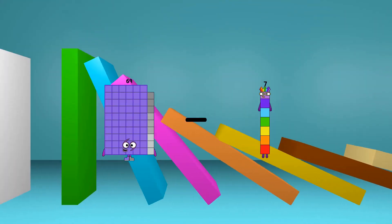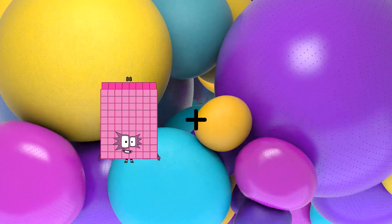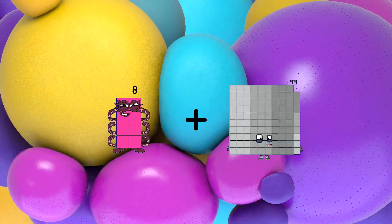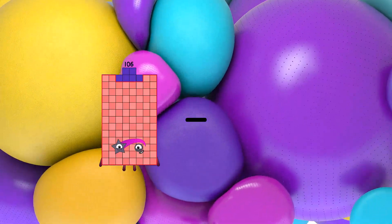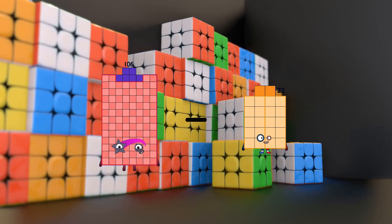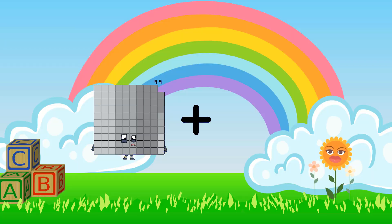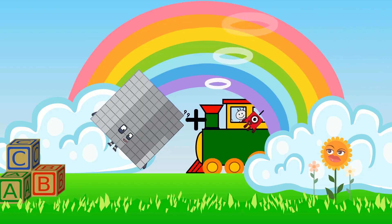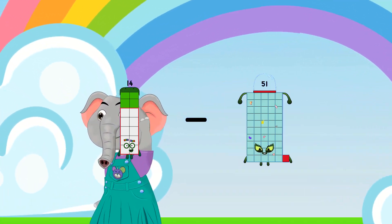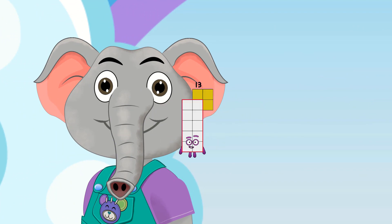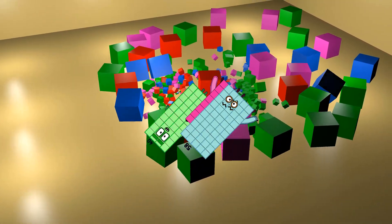69 minus 54 equals 15. 8 plus 97 equals 105. 106 minus 68 equals 38. 99 plus 1 equals 100. 14 minus 1 equals 13. 40 plus 58 equals 98.